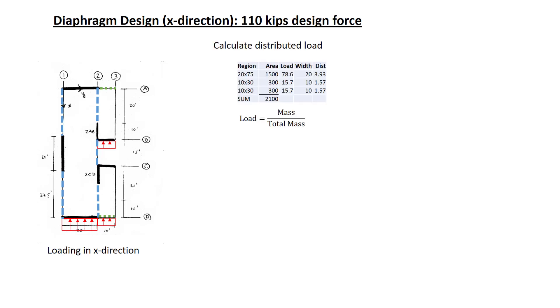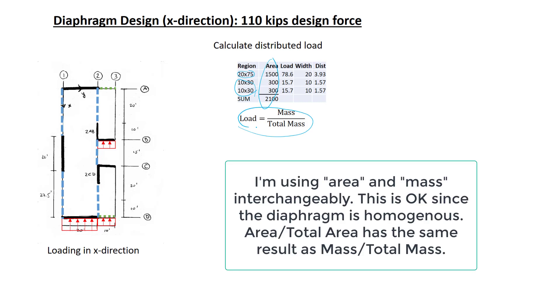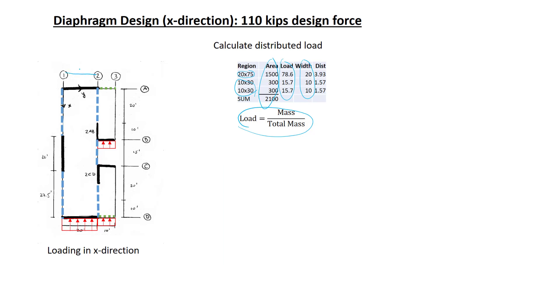So for the three different regions, there's a large 20 by 75 region and two smaller 10 by 30 regions. Those are the cantilevered regions between lines 2 and 3. I've indicated their area and sum the total area. The load is equal to the mass of each section divided by the total area. We have various widths for each of the sections. The larger section is 20 feet. The smaller section is 10 feet. And so we can then calculate the distributed load as the load divided by the width. Those are the values on the diagram that we just calculated.